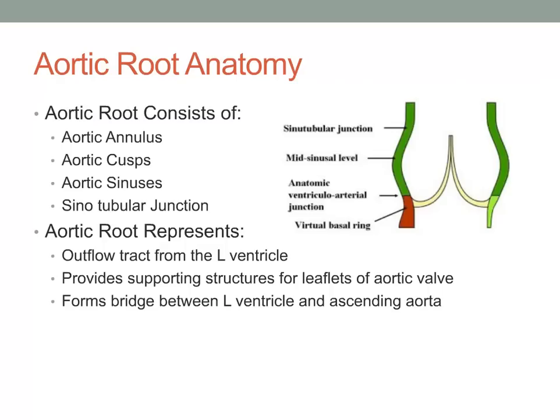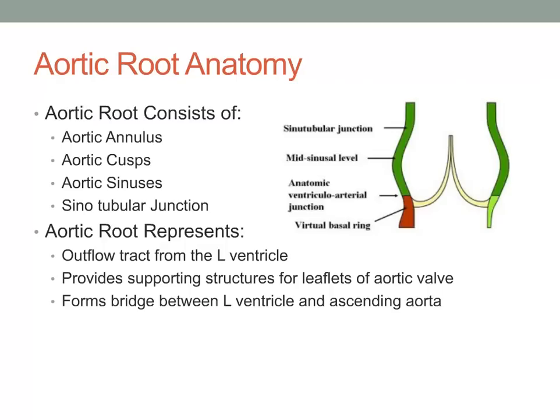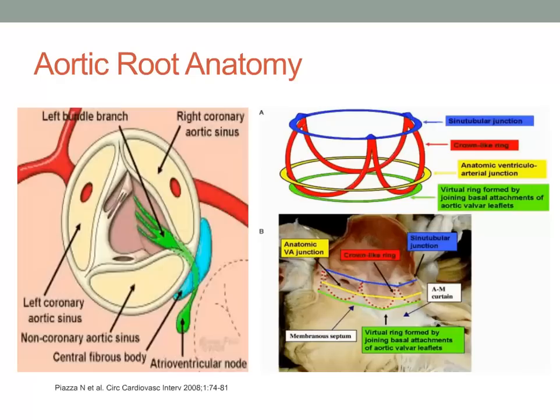An understanding of aortic root anatomy is critical to best describe and differentiate between aortic root enlargement techniques. The aortic root consists of the aortic annulus, aortic cusps, aortic sinuses, and the sinotubular junction. The aortic root represents the outflow tract from the left ventricle, provides supporting structures for the leaflets of the aortic valve, and forms a bridge between the left ventricle and ascending aorta. These pictorials represent various anatomic areas of importance involving the aorta, aortic valve, and aortic root.